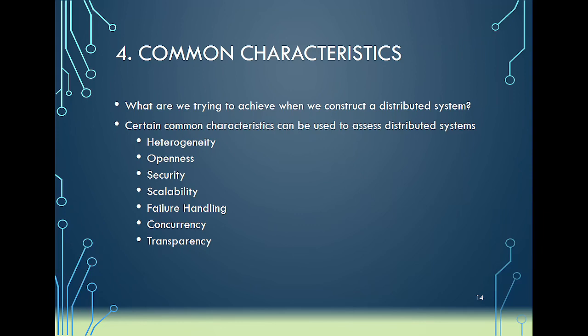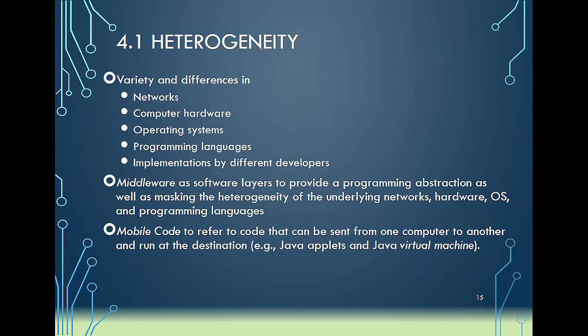All components within a distributed system must work concurrently to achieve a given objective. Transparency means you can present one single interface that gives users everything they want — for example, when you visit a Google website you don't need to understand the underlying infrastructure behind the scenes. Heterogeneity is handled by middleware, which provides an abstraction layer that protects users from understanding the technical complexity. We also have mobile code, such as Java applets or web applets.